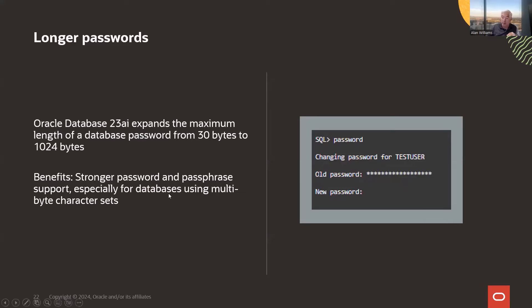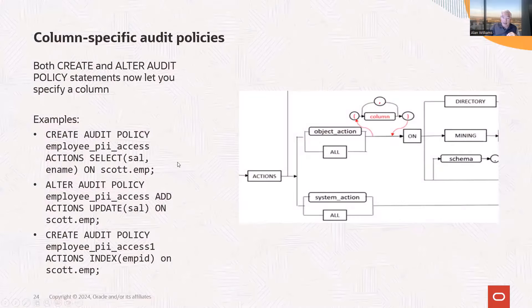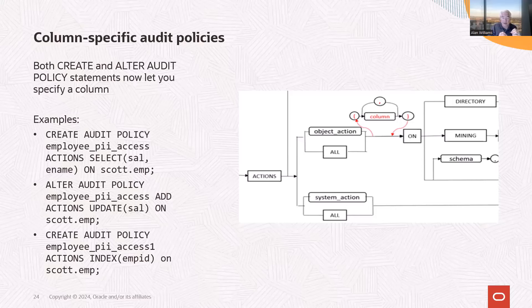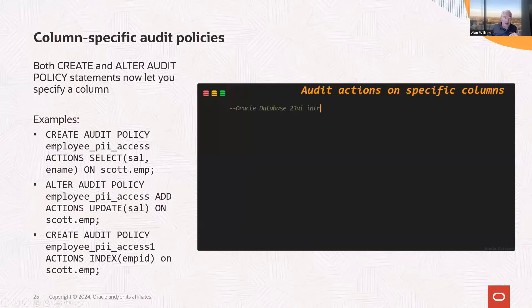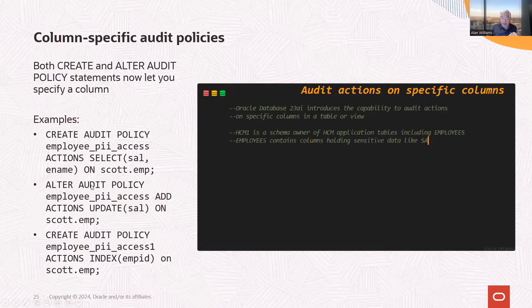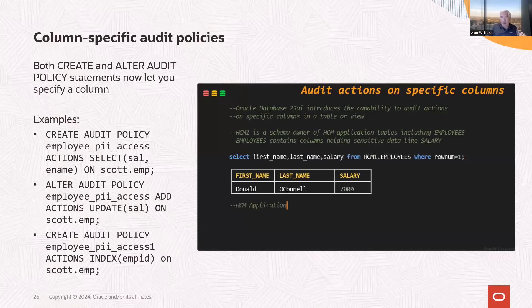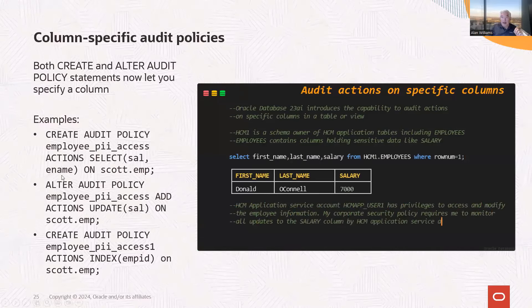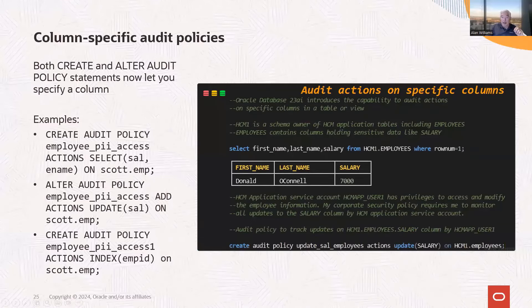On the audit side, we've added the capability to specify columns as part of your audit policy. This helps focus on what you need to see — instead of gathering lots of information about a record, just the changes you're interested in tracking. It really helps with performance, reduces volume, and makes it easier to find what you want to audit. This adds column information into unified audit. This also kicks off a discussion about the desupport of traditional audit in favor of unified audit.